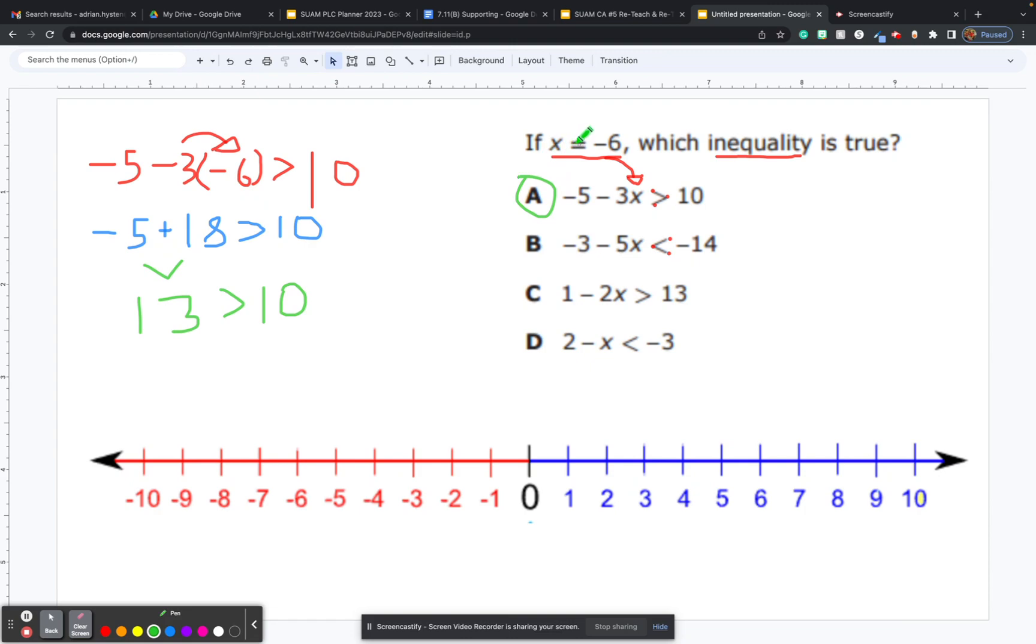Just a real quick mental math check. If you plugged in negative 6 on this one here, we'd have negative 5 times negative 6, which is a positive 30, negative times a negative. Negative 3 plus 30 would be 27, and 27 is not less than negative 14. And it wouldn't work for C or D either.